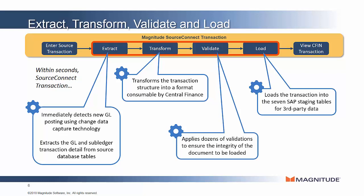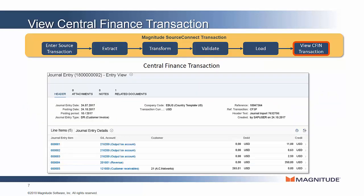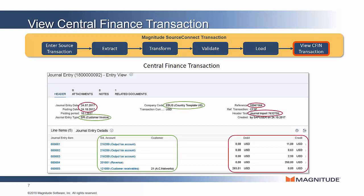This all happens within 60 to 90 seconds, which ensures that the finance team has global visibility to financial data across their ERP landscape in near real time. Now we can see this transaction posted into Central Finance — here we see the transaction attributes and also the related master and reference data.